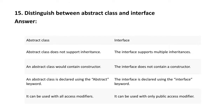Next question: distinguish between abstract class and interface. An abstract class does not support inheritance, whereas the interface supports multiple inheritances. An abstract class would contain a constructor, whereas the interface does not contain a constructor. An abstract class is declared using the 'abstract' keyword, whereas the interface is declared using the 'interface' keyword. An abstract class can be used with all access modifiers, whereas the interface can be used with only the public access modifier.